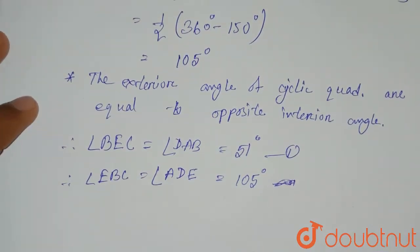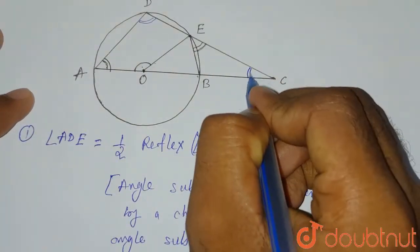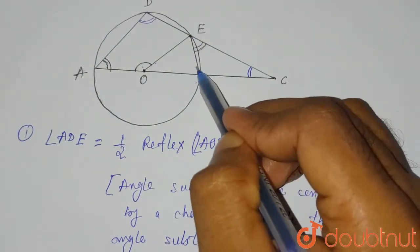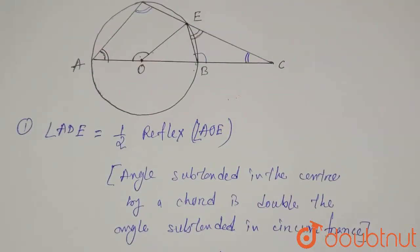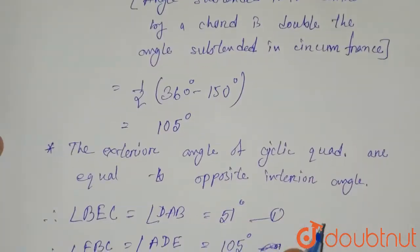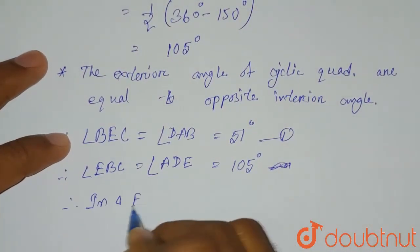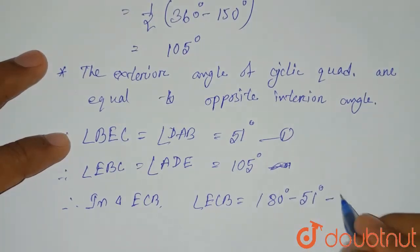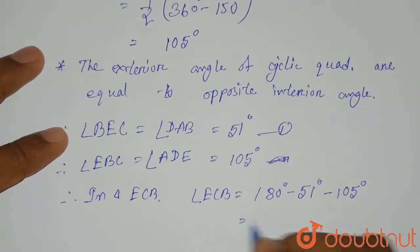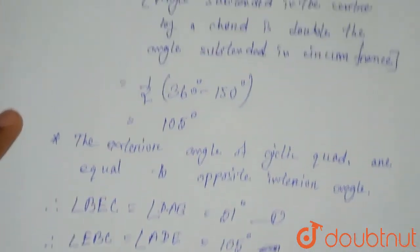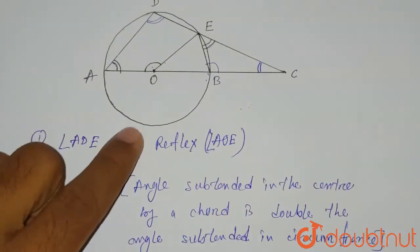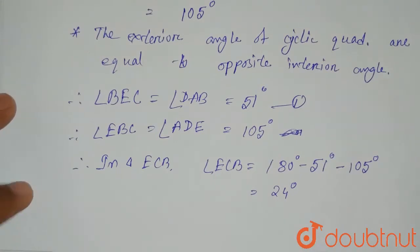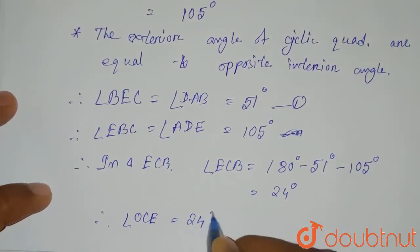We use angle EBC = 105° to find the second required answer, angle OCE. Since the angles in triangle ECB sum to 180 degrees, angle ECB equals 180° − 51° − 105° = 24 degrees. Therefore, angle OCE equals 24 degrees.